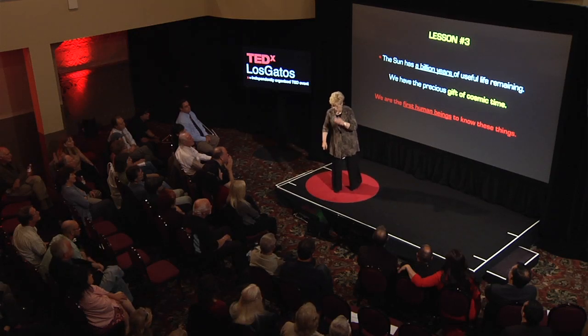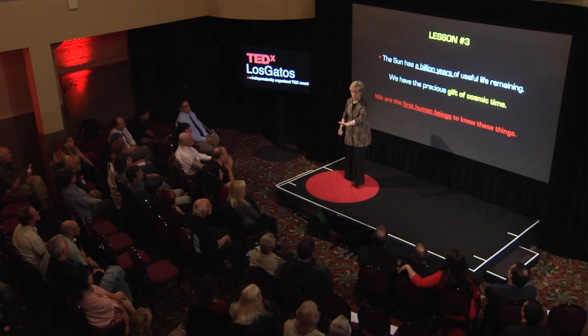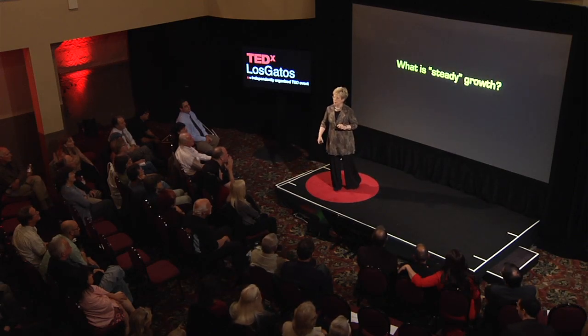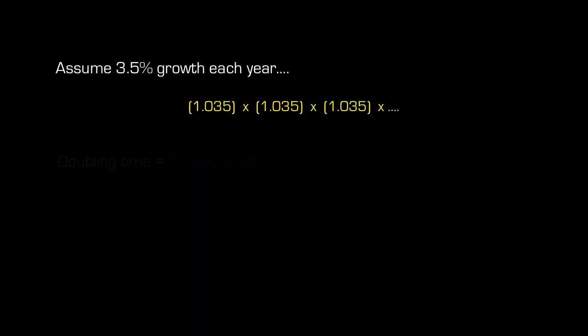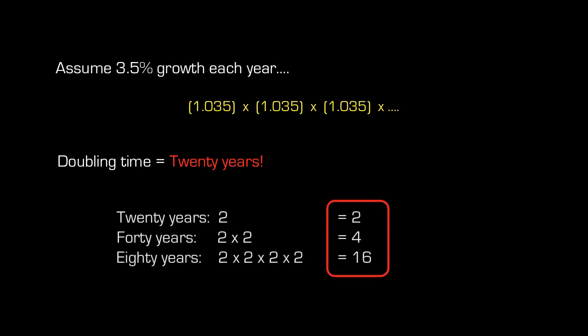Now, what is the problem? The problem is growth — steady growth. Sounds good: steady, static, predictable. Not so on long time scales. Let's take a modest growth rate, the kind we like to see with our economy: 3.5% per year. Multiply it year after year. In 20 years, whatever is growing at that rate has doubled. 40 years, you've got four times as much. In a human lifetime of 80 years, you've got 16 times as much stuff. And we're just getting started — we haven't even gotten to a cosmic time scale.